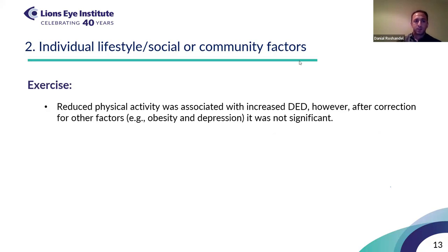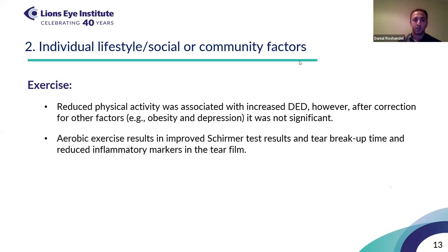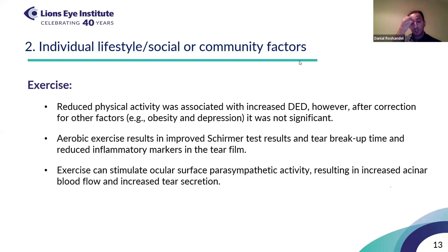Regarding exercise, reduced physical activity was associated with increased dry eye disease, but after correction for factors such as obesity and depression, this relationship wasn't significant. However, there was a significant relationship between aerobic exercise and improved Schirmer test results, tear breakup time, and reduced tear film inflammatory biomarkers. It has been suggested that exercise can stimulate ocular surface parasympathetic activity and increase tear secretion.